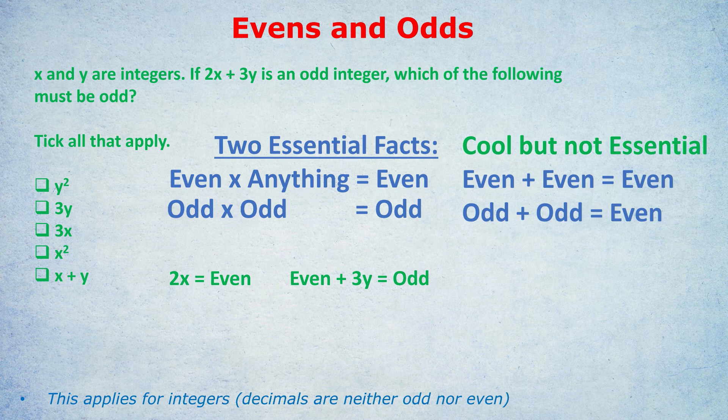Now let's go to the addition rule. An even plus something equals odd — so what is that something? It must be an even plus an odd to get an odd, because an even plus an even gets you an even. So the 3Y must be odd — otherwise, how else do you get an even plus something to equal an odd?